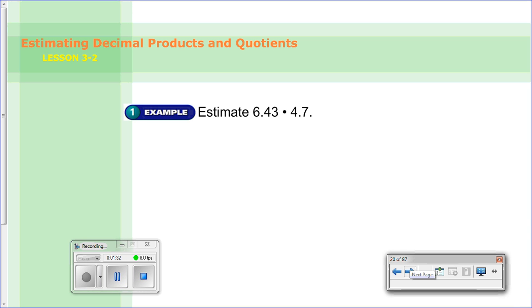And we're going to jump right into this. When we're estimating products or quotients, the main idea here is round to the nearest whole number. So you see right away how that warm up helped. We have 6.43. Well, again, this is closer to 6 because you can look at the 4 right after the 6. And you can see it's a 4, 4 or less you round down. And then we look here, 4.7, well that's closer to 5. Well, we have 6 times 5. Our answer is about 30.